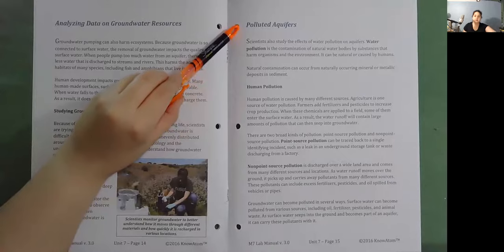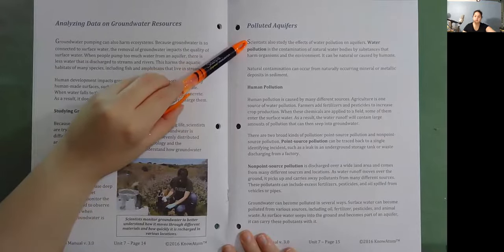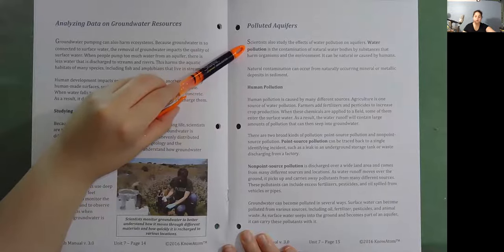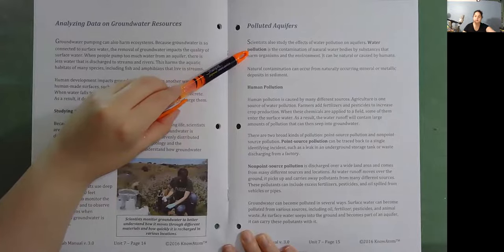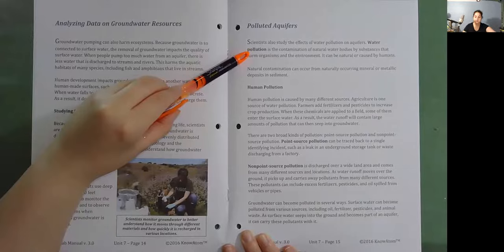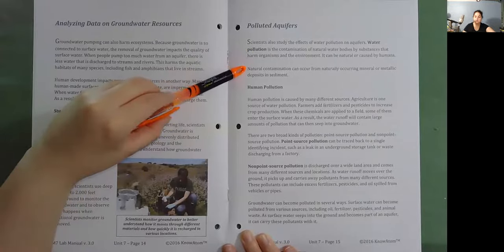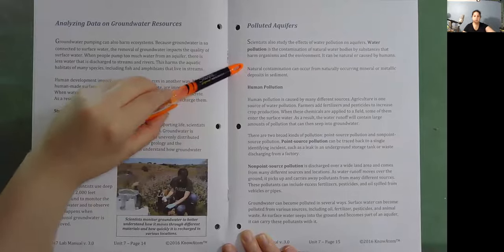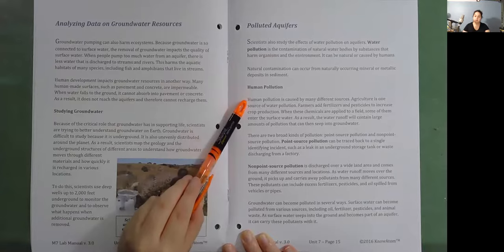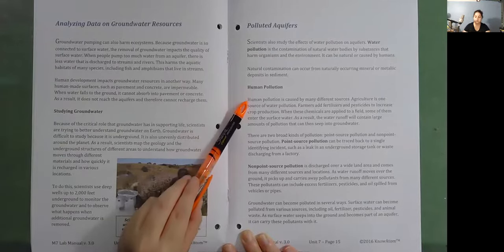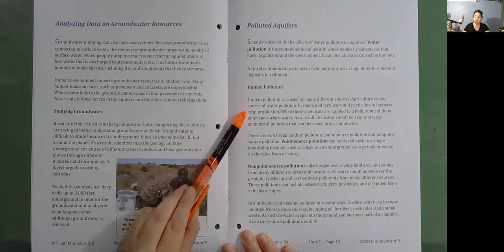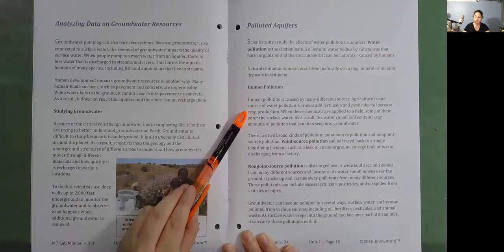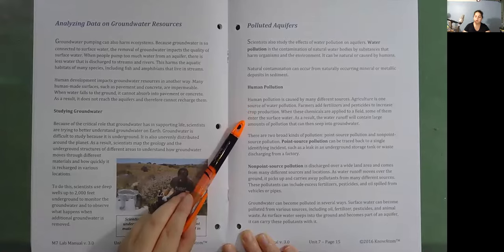Polluted aquifers. Scientists also study the effects of water pollution on aquifers. Water pollution is the contamination of natural water bodies by substances that harm organisms and the environment. It can be natural or caused by humans. Natural contamination can occur from naturally occurring mineral or metallic deposits in sediment. Human pollution is caused by many different sources. Agriculture is one source of water pollution. Farmers add fertilizers and pesticides to increase crop production. When these chemicals are applied to a field, some of them enter the surface water. As a result, the water runoff will contain large amounts of pollution that can then seep into groundwater.